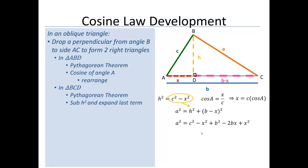When I do that, this is the expression I get, C squared minus X squared, plus, and these three terms here are just the expansion of B minus X all squared.